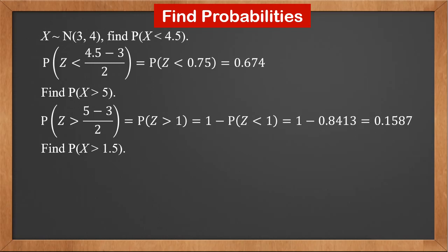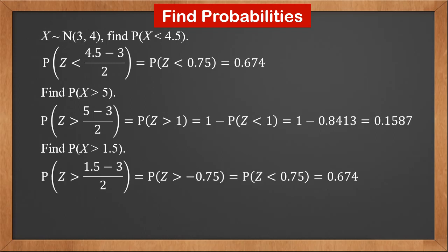Find P(X greater than 1.5). By standardizing it, we get P(Z greater than 1.5 minus 3 over 2), which is P(Z greater than negative 0.75). By symmetry, it is equal to P(Z less than 0.75). Therefore, the answer is 0.674.